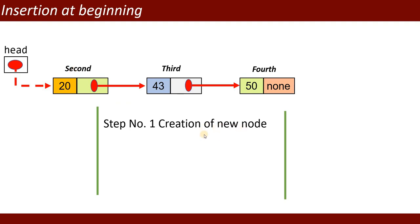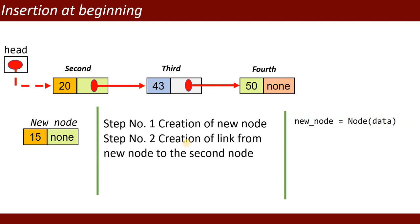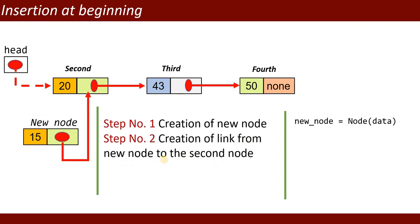Step one: creation of a new node. First of all you create a new node — I am creating an object of the Node class and passing data as an argument, which is the value of that node. Step two: creation of a link from the new node to the second node. The code is: new_node.next = self.head, which sets the new node's next to the current head.